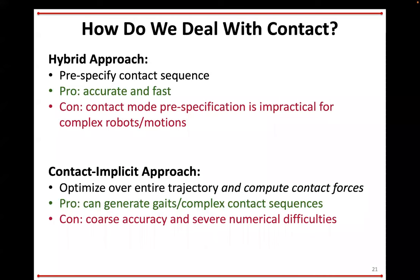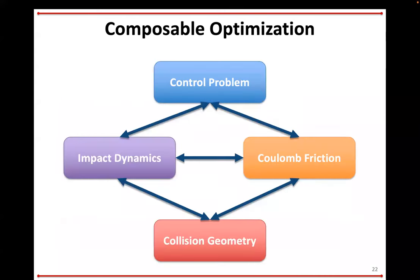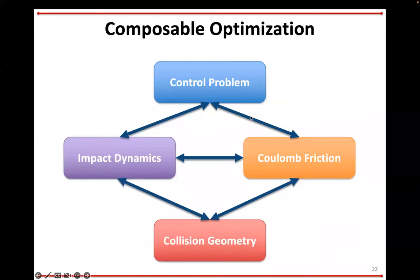So how are we going to fix this? We're going at this from the perspective of what I've started calling composable optimization. The idea is rather than trying to smush this stuff all together and smooth it out, we're going to treat each of these problems as an optimization problem in its own right, write a custom solver for that particular problem, and then differentiate through the solver. So we'll have a Coulomb friction solver — solve the Coulomb friction problem, differentiate its solution — and pass that to the impact dynamics problem, the control problem, et cetera. We're going to connect multiple solvers and rely on some recent ideas from differentiable optimization to put these pieces together.